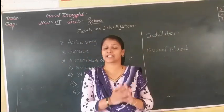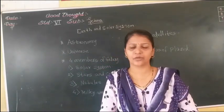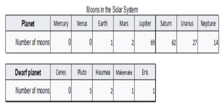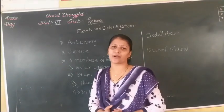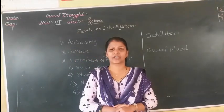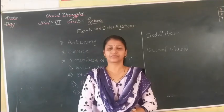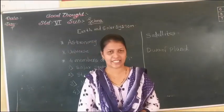Let's go through the satellites of other planets in sequence. Mercury does not have a satellite. Venus does not have a satellite. Earth has one satellite — the Moon. Mars has two satellites. Jupiter has 16 natural satellites. These natural satellites revolve around their planets and also around the Sun. In your last year's book there was a lesson on Moon and Satellites — please go through that lesson.